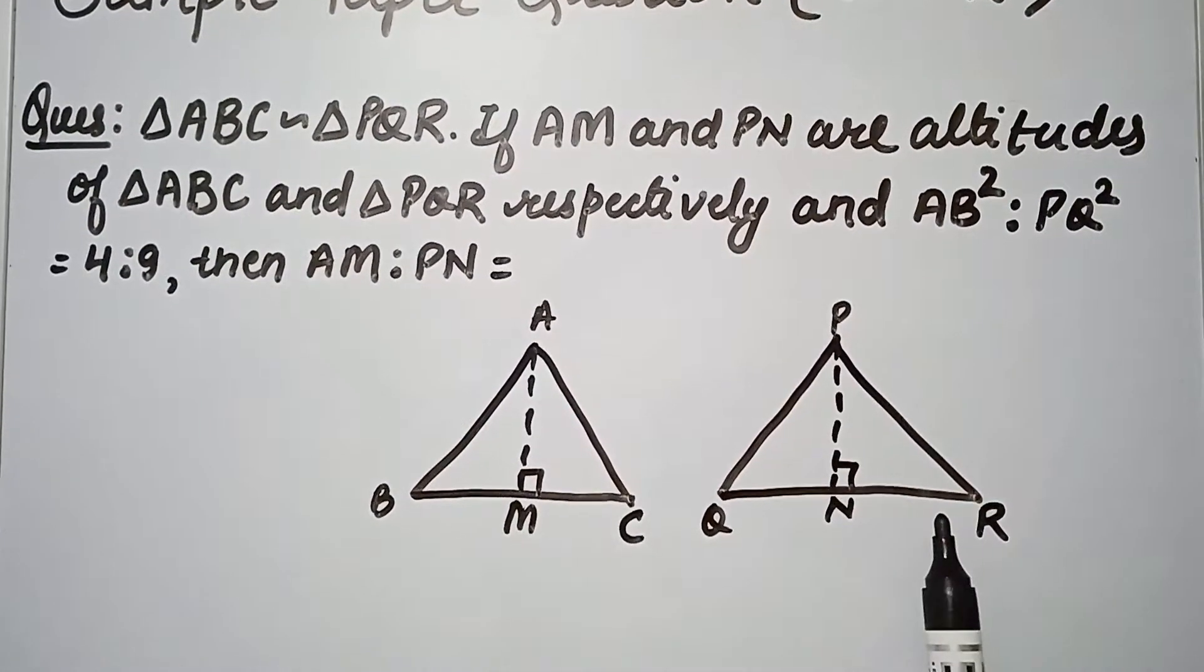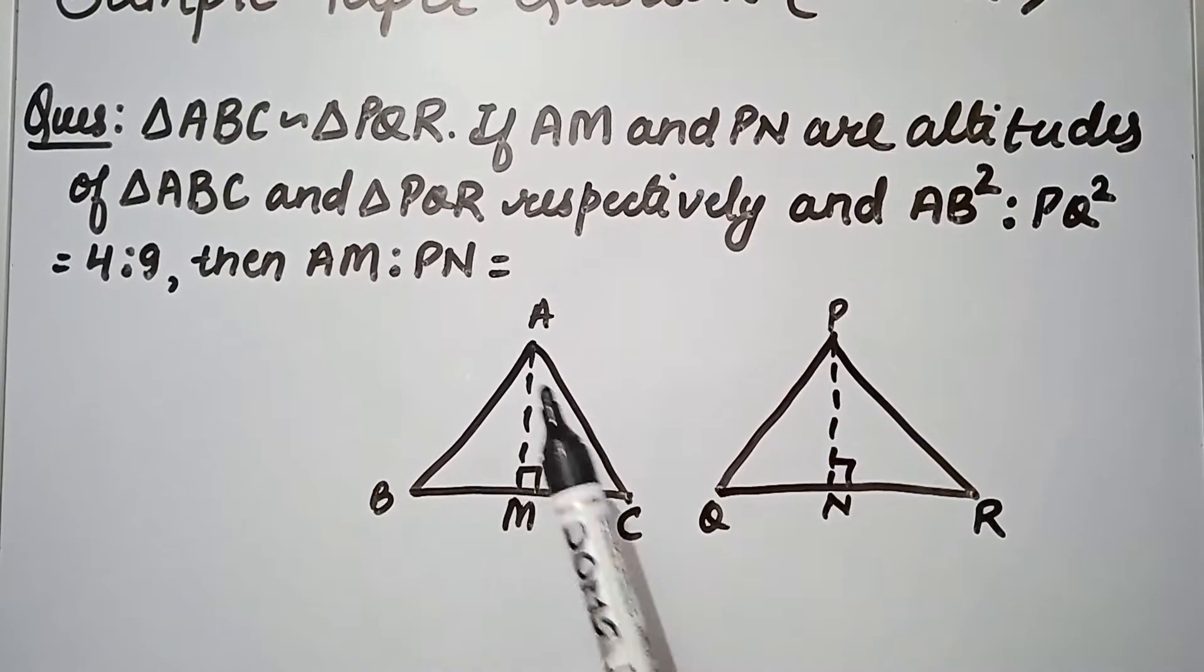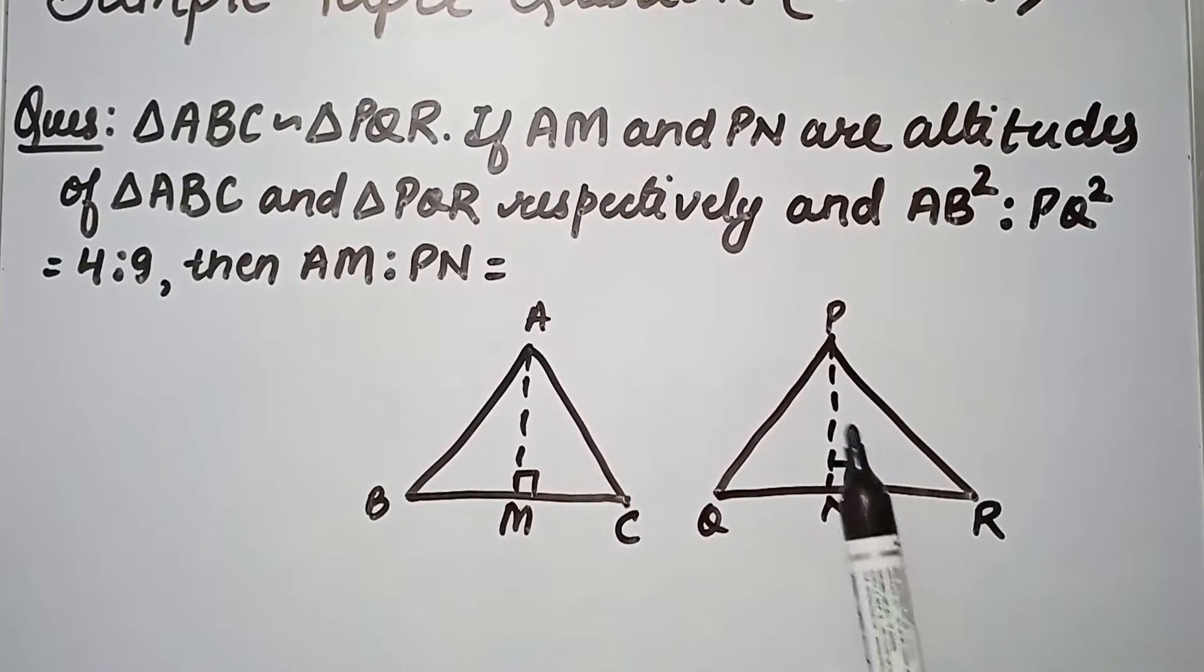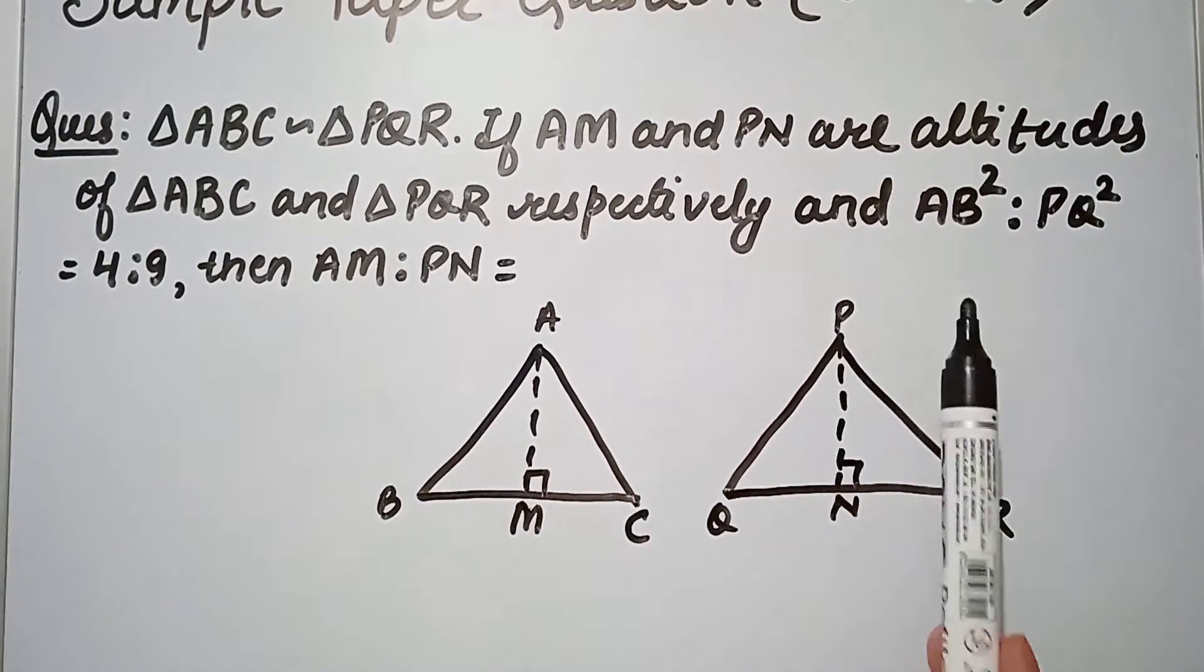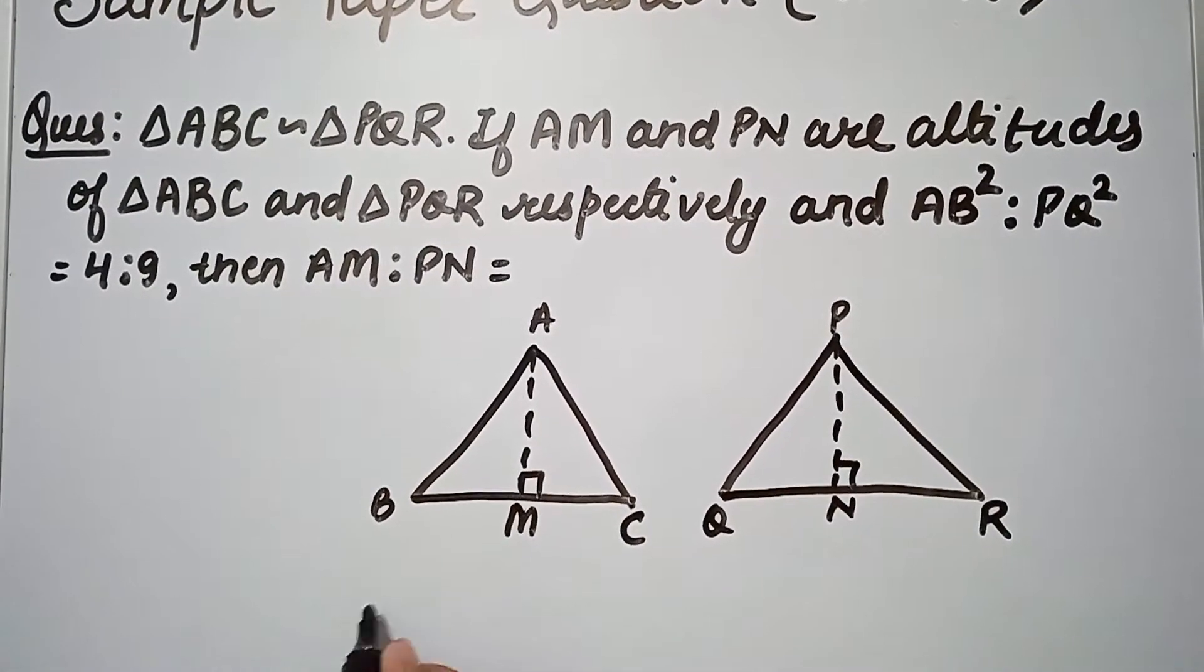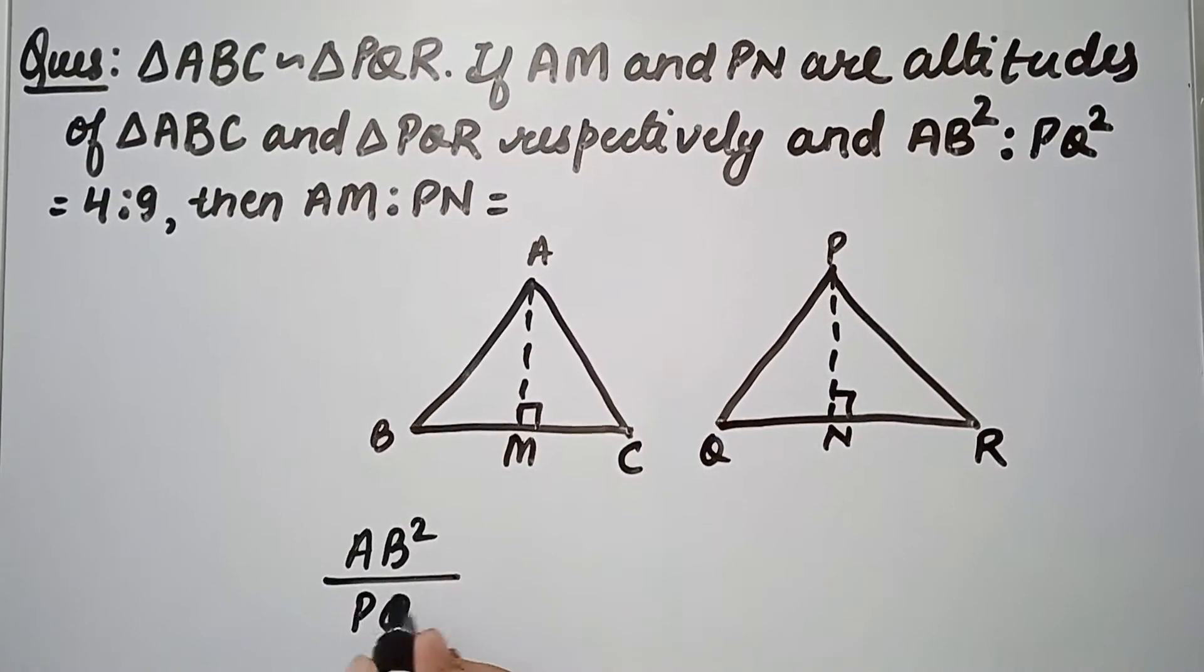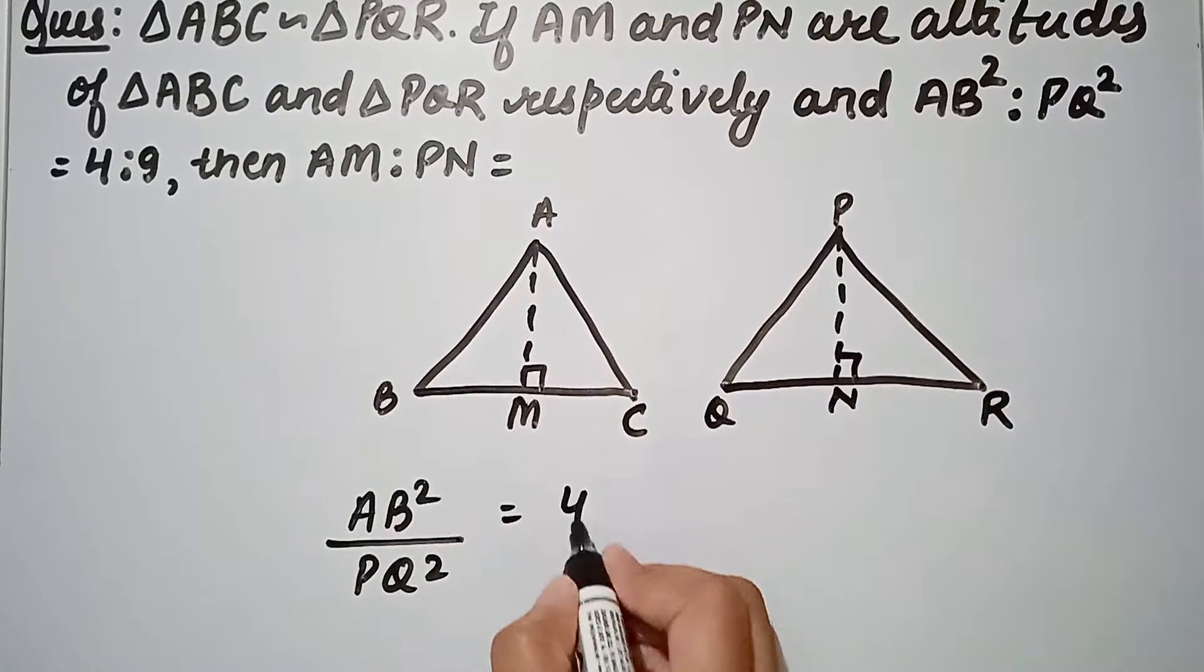Now we have AB square ratio PQ square value given. AB square upon PQ square is equal to 4 upon 9.